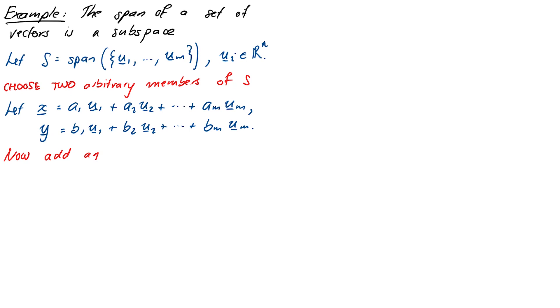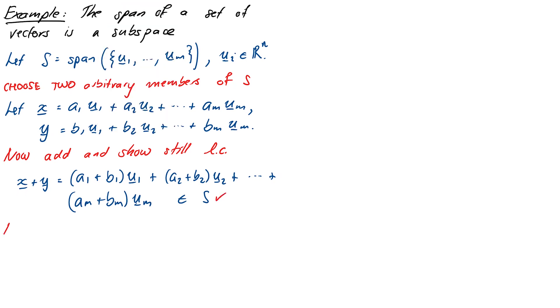Now we need to show that when we add them up, we can still express the answer as a linear combination of the UI vectors. So x plus y is just going to be (A1 + B1) times U1 plus (A2 + B2) times U2 through to (AM + BM) times UM. This expression is itself a linear combination of the U's, which is what we wanted. So we've satisfied our first property.